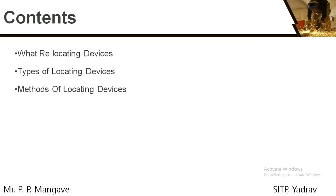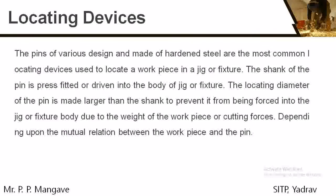Now, what are the contents of this lecture? We will be seeing what are locating devices, what are different types of locating devices, and what are different methods of locating devices. In the previous lecture, as explained by Mr. P.J. Patil sir, why locating and clamping devices are required — that is, to restrict the degrees of freedom. Before performing any operation or machining any workpiece, we require to restrict the degrees of freedom so that the machining operation is done properly without any damage to the tool or the workpiece.